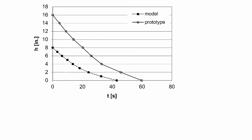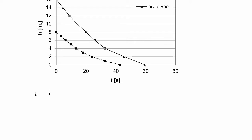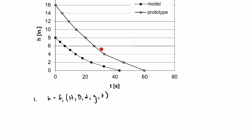Now we want to do a dimensional analysis. After doing the analysis and re-plotting in dimensionless form, we'll see how the data looks. We write down the functional relationship for the dimensional quantity: height h is a function of capital H, capital D, little d, gravitational acceleration g, and time t. We don't know what this function is — you'd find it by curve-fitting the data empirically or through a Bernoulli-type analysis — but we're leaving it as a function.